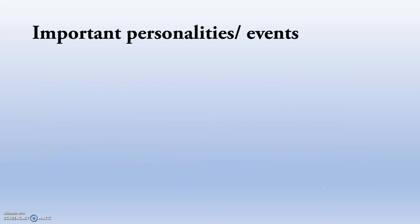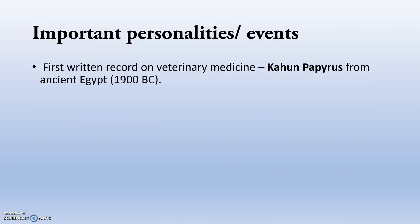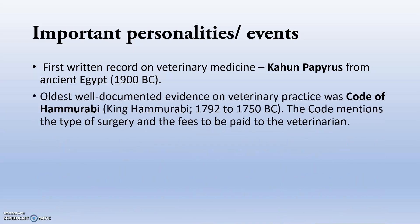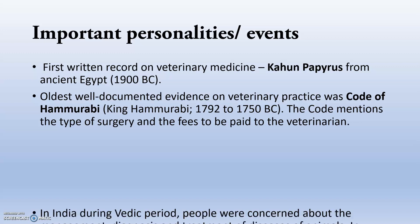Moving to the important personalities and events that led to the formation of the veterinary field — the first written record on veterinary medicine is the Kahyun Papyrus from ancient Egypt. The oldest well-documented evidence on veterinary practice was the Code of Hammurabi, which mentions the type of surgery and the fees to be paid to the veterinarian.